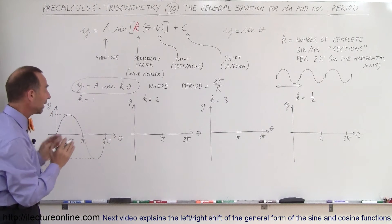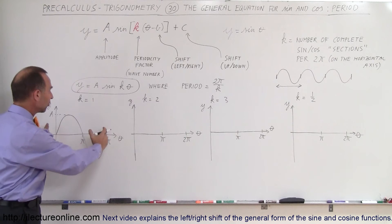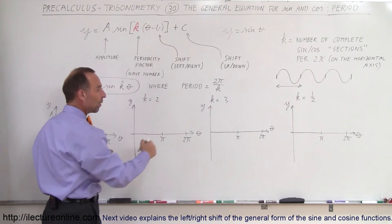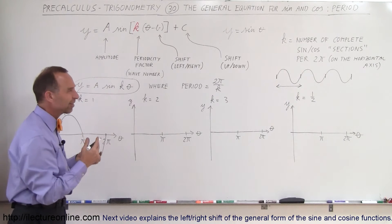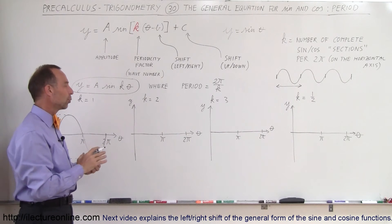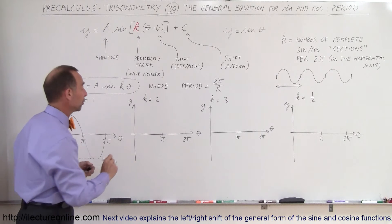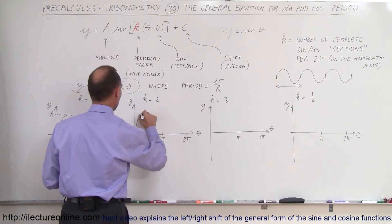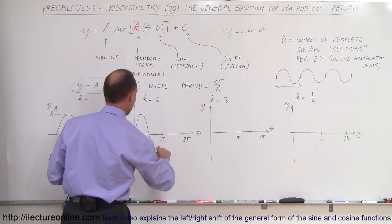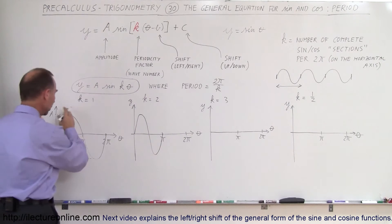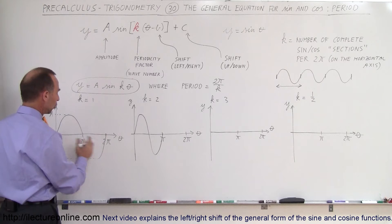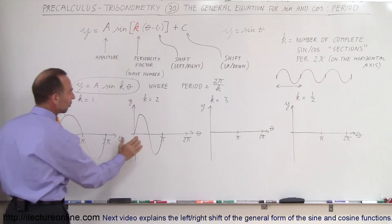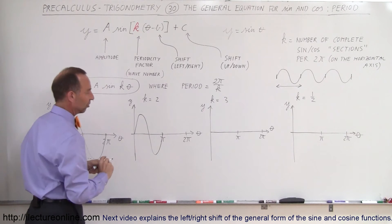But when k is equal to 2, what happens is you have more of these sections in a 2π region. That means the oscillation will be twice as fast—well, fast would not be a good word—it would occur twice as often, that would be a better word. So in that case we have the function look more like this: goes to a maximum, goes back to zero, to a minimum, and back to here. So this whole oscillation portion, or section on the horizontal axis, happens in half the distance.